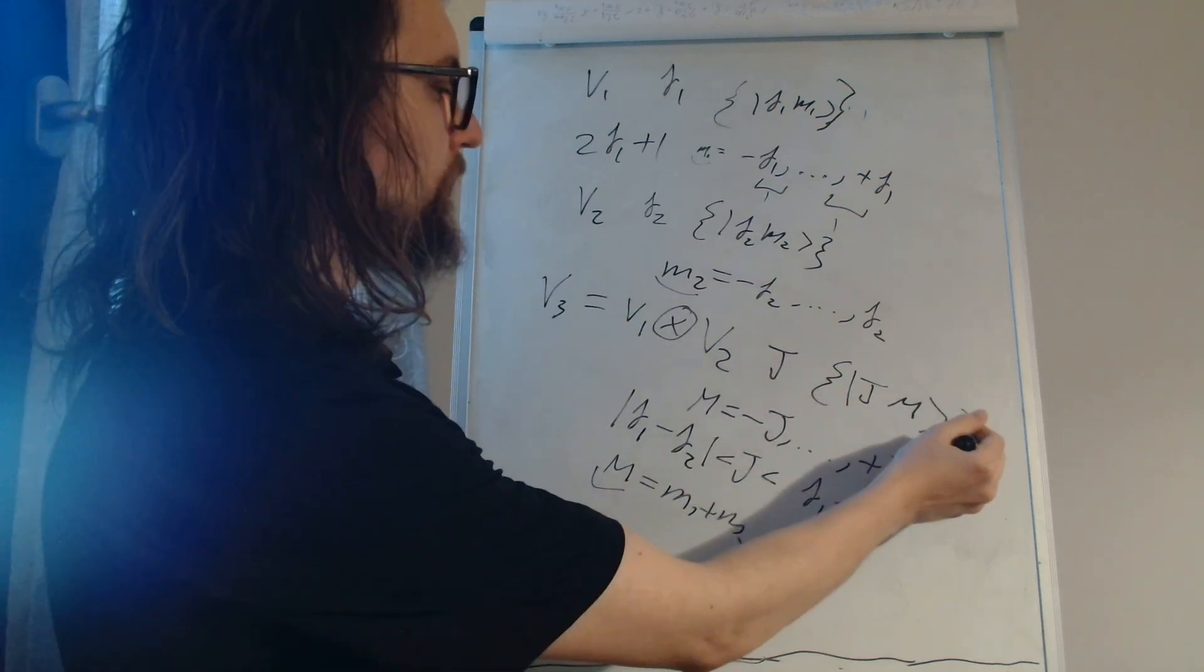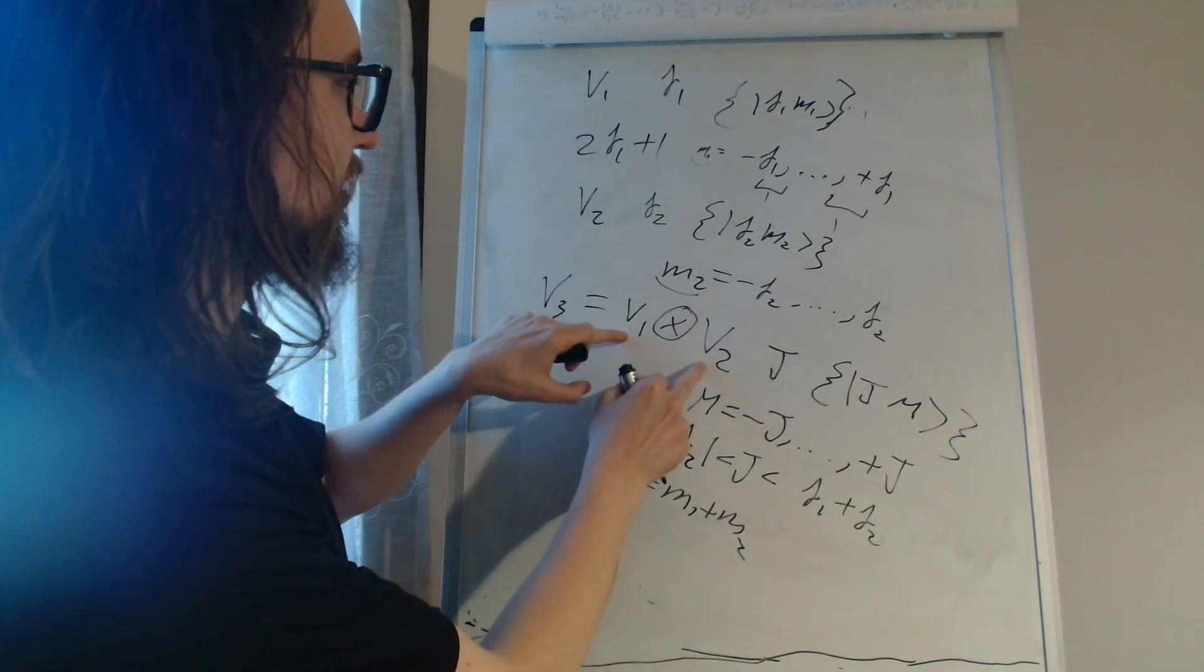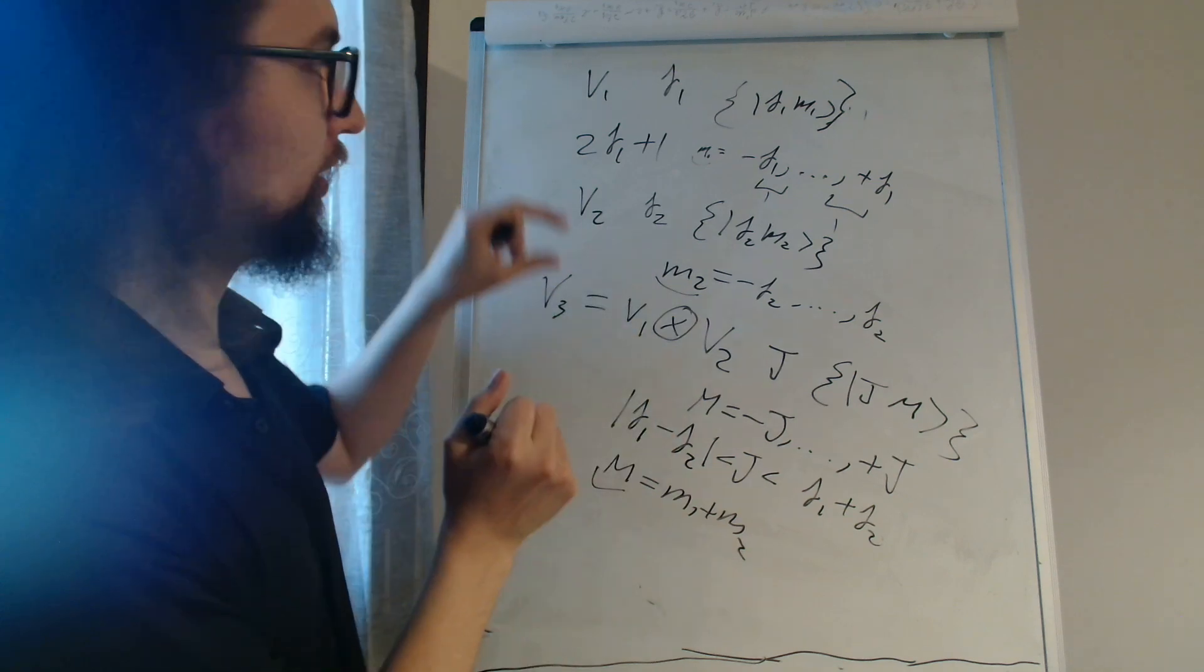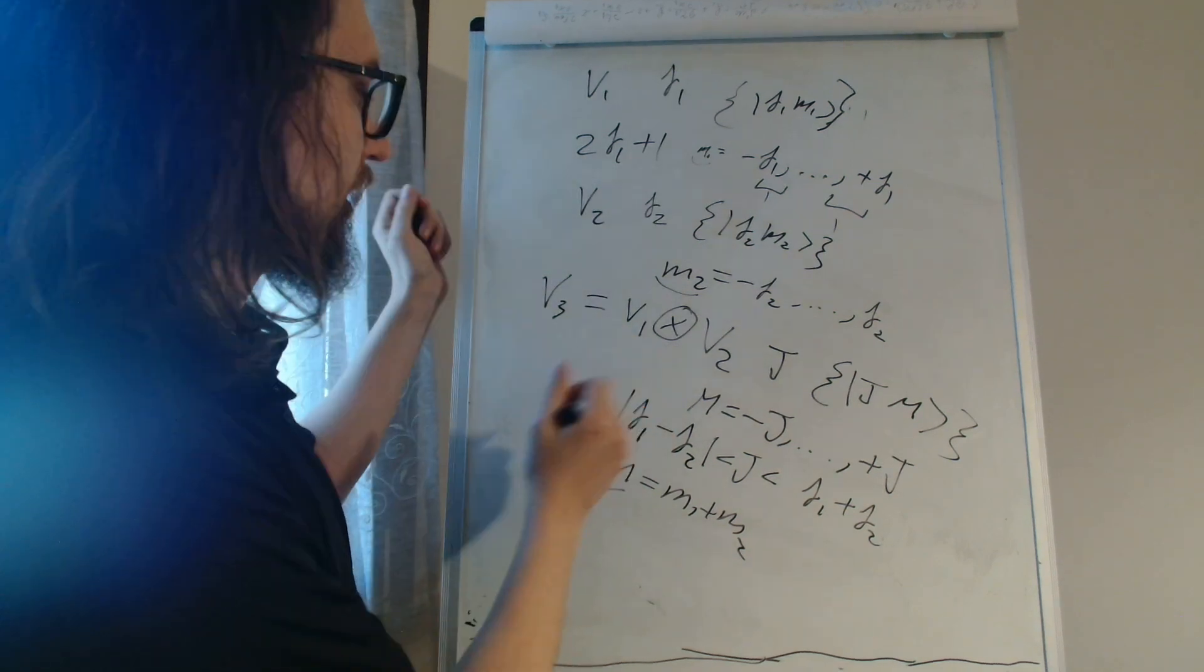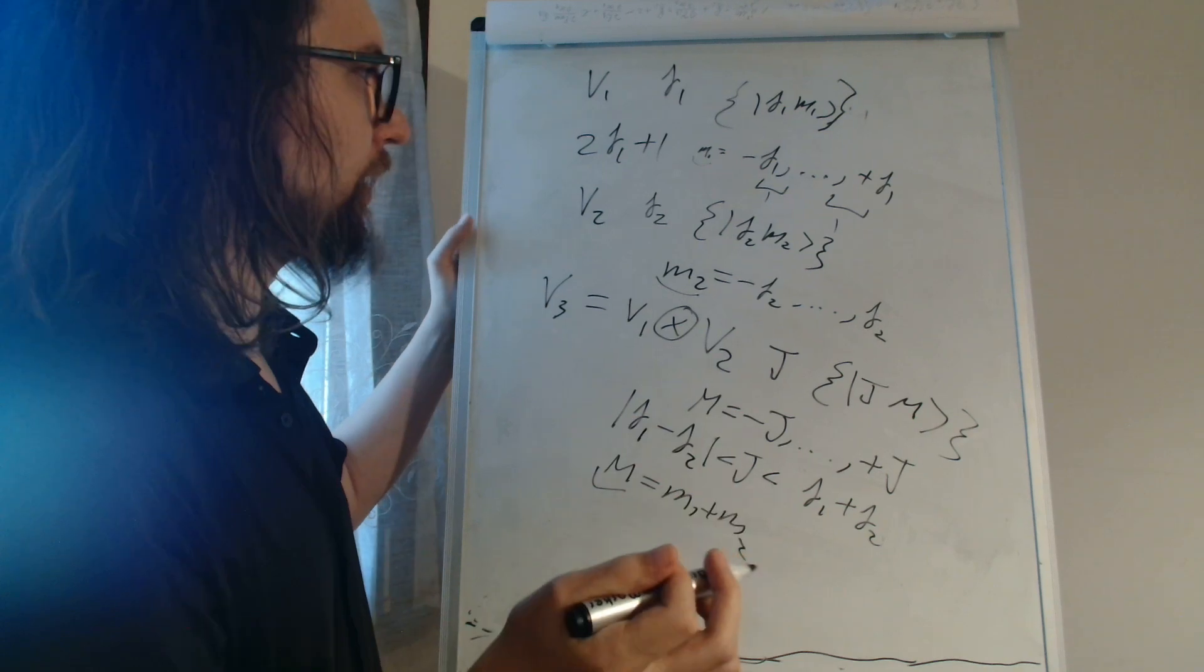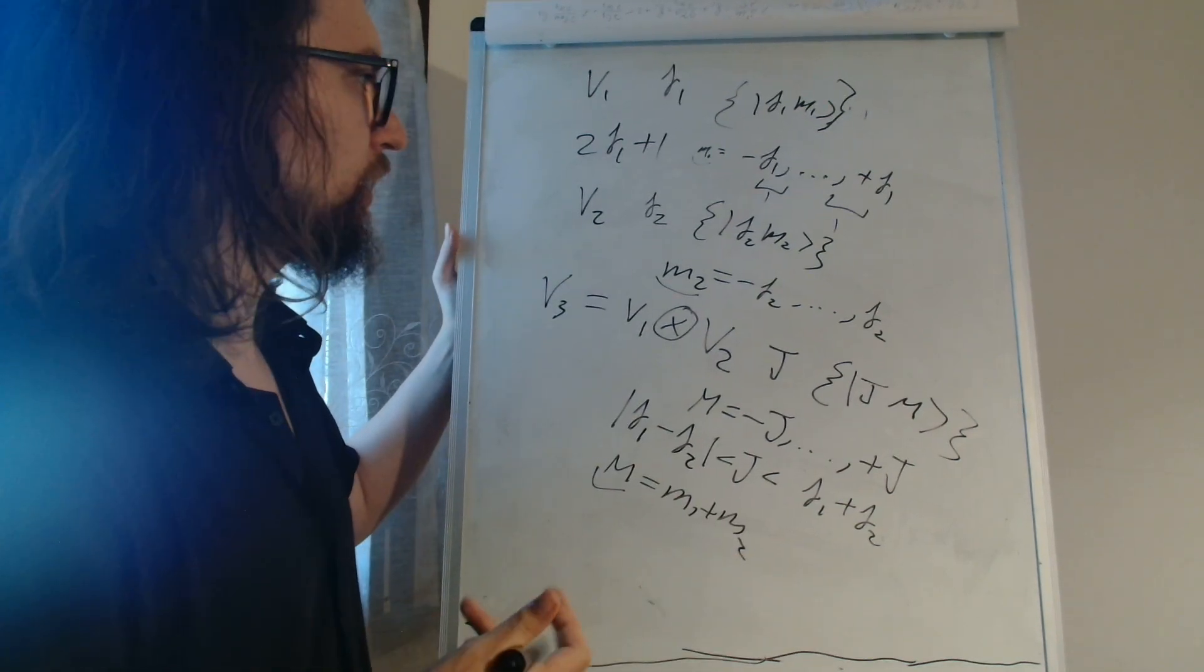If we have a system with a particular J and a particular M, it would be decomposed into two angular momenta J1, J2 and M1, M2 with a particular probability for each possibility.